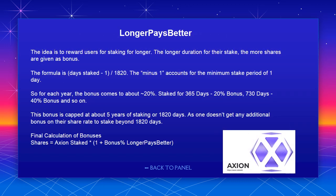Longer pays better: the idea is to reward users for staking longer. The longer the duration of their stake, the more shares are given as a bonus. The formula is: (days staked) × (1/1820) − 1. The minus 1 accounts for the minimum stake period of 1 day. So for each year, the bonus comes to approximately 20%. For example: staked 365 days = ~20% bonus; 730 days = ~40% bonus; and so on. This bonus is capped at about 5 years of staking, or 1820 days, as one doesn't get any additional bonus on their share rate beyond 1820 days.